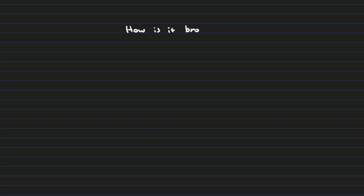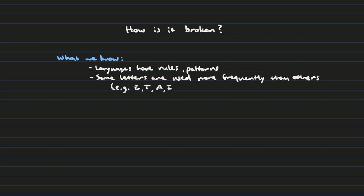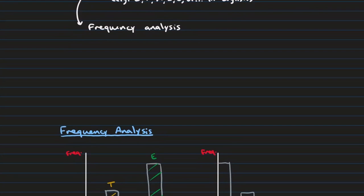The question you might be asking yourself is: how do you break this? Here's what we know: languages have rules, and this is going to become incredibly important. We also know that some letters are used more often than others. For example, in the English language, E, T, A, I, O, and U are used significantly more than the rest of the letters in the alphabet. This method is known as frequency analysis, and this is going to be how we break the monoalphabetic substitution cipher.